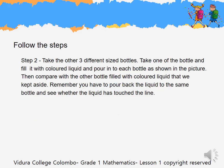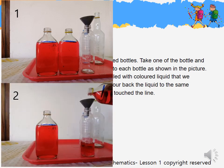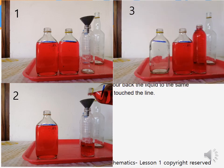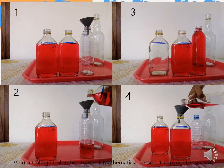Step 2: Take the other 3 different sized bottles. Take 1 of the bottles and fill it with colored liquid and pour into each bottle as shown in the picture. Then compare with the other bottle filled with colored liquid that we kept aside. Remember, you have to pour back the liquid to the same bottle and see whether the liquid has touched the line. Step 3: Keep doing the same to the other 2 bottles.